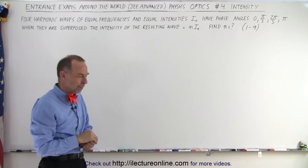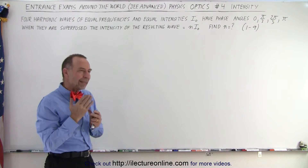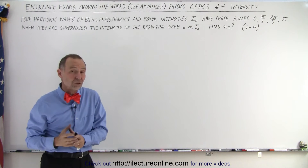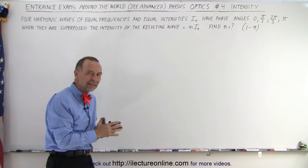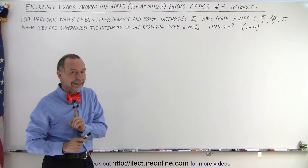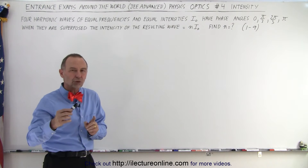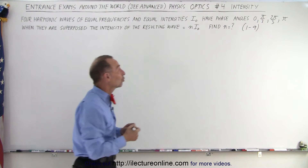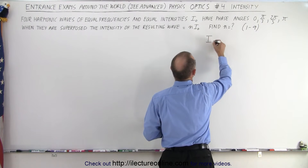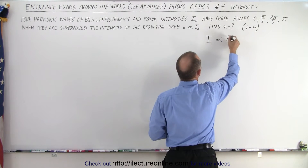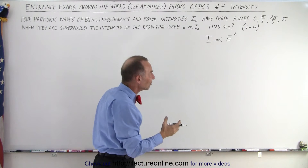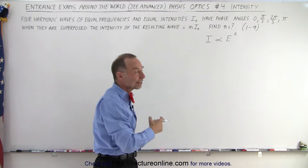We are told that the total intensity is N times the intensity of each individual wave. To solve this, we are supposed to add the electric field phasors — not the intensities — and we have to know that the intensity is proportional to the electric field strength squared.